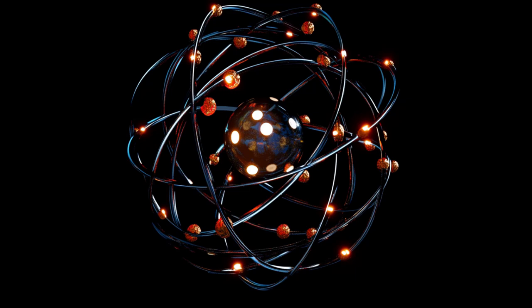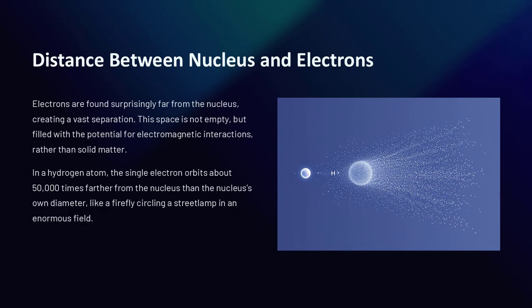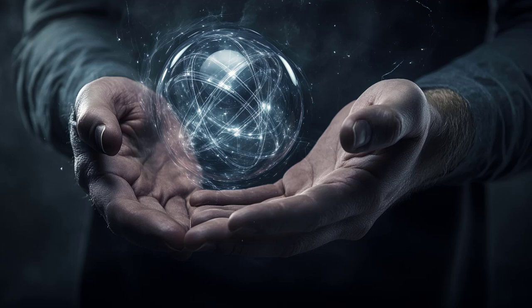Imagine a flea sitting on a large ferris wheel. The flea represents the nucleus, and the ferris wheel represents the atom. Although the flea is the heaviest part, the ferris wheel's vast structure, mostly made of empty space, defines its full size. Electrons, despite being incredibly small and lightweight, are found at surprisingly large distances from the nucleus. This vast separation between the nucleus and the electron cloud creates a sense of scale that's difficult to comprehend.